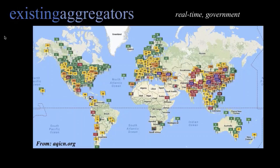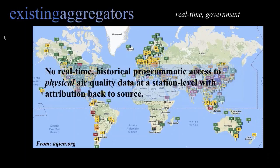There are several aggregators out there across the world — AQICN.org is one of the best in terms of geographic scope, and it also gives a sense of where there are gaps in monitoring. But all of these aggregators, to date, don't provide data in the most useful way for connecting it with all different users. They build on data in a particular way that sustains their organization, which makes sense. But there wasn't something that provided real-time, historical, programmatic, openly accessible physical air quality data — not just an air quality index.